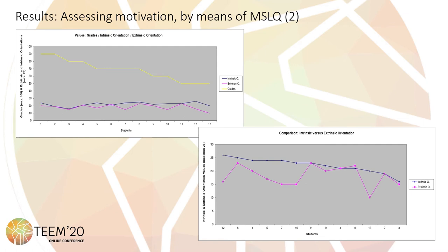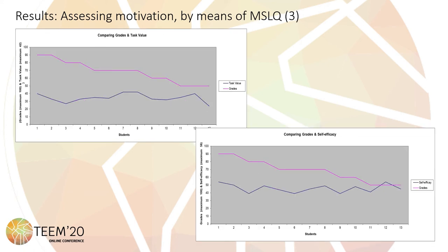Here we have more results. Here we can see the comparison between intrinsic motivation and extrinsic motivation for each student. In one of these slides, the grade got by each one of the students is also included in the graph. In this slide, results comparing grade and test value, and grade and self-efficacy per student, are shown.